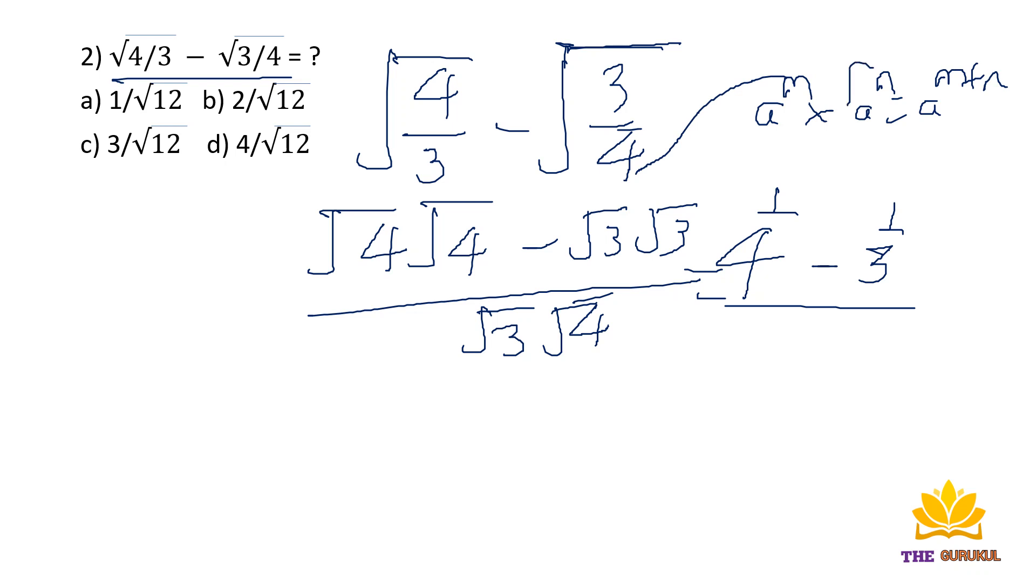We can write root 3 times root 4 as root 12, because root times root stays as is and bases multiply. So we get 4 minus 3 divided by root 12, which equals 1 by root 12.